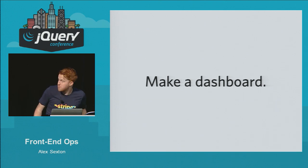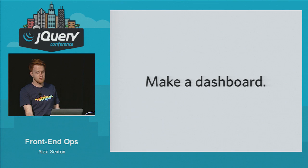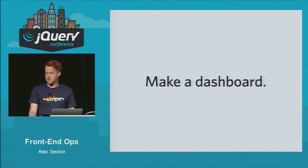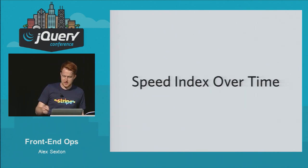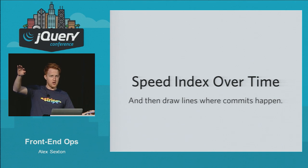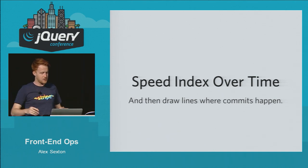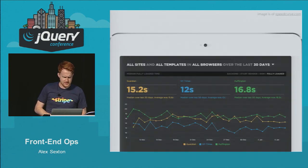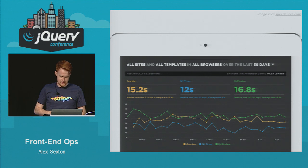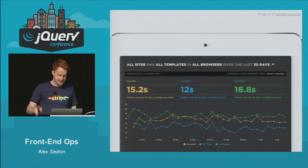You should be testing against production or something that exactly mimics production. Speedcurve.com — a guy in New Zealand is building this — uses WebPageTest in the background. You can use WebPageTest as an API or CLI. Patrick Meenan at Google is working on it. It'll load your page in real browsers and tell you how fast they are. You can also track speed index and page weight over time, broken down by file type.